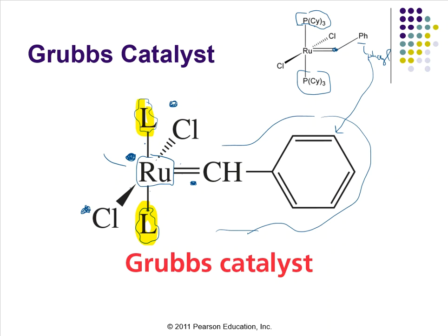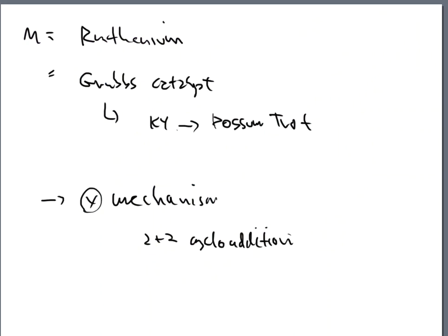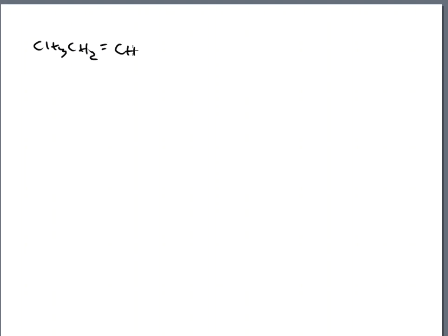The L groups can change and get modified - all those choices exist - but we're just going to call it Grubbs. We're not even going to write ruthenium or Ru like we did with palladium - just Grubbs, and that's it. Let's take a look at an example: CH3-CH=CH-CH3, and we're going to react that with Grubbs.